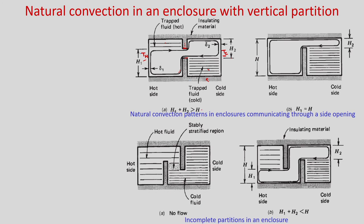In another configuration where h1 equals h (partition only from the bottom, not from the top), the fluid goes straight up and comes into contact with the cold fluid, cold fluid is trapped, and the fluid circulates continuously. In this case there is no trapped hot fluid from the top. This shows how natural convection takes place in enclosures communicating through a side opening with different partition heights.